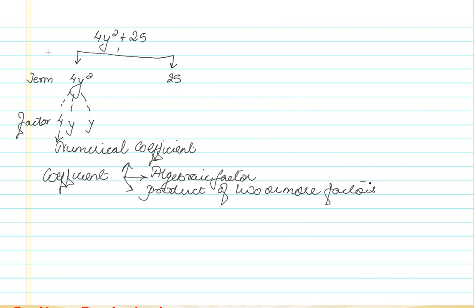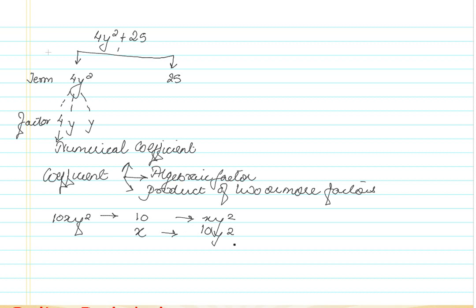Let us take the term 10xy squared as an example. If I want to find a numeric coefficient, it would be 10. But for coefficient more generally: I can say 10 is the coefficient for xy squared; I can say x is the coefficient for 10y squared; and I can say y squared is the coefficient for 10x.